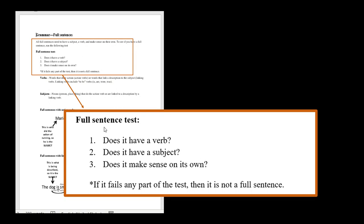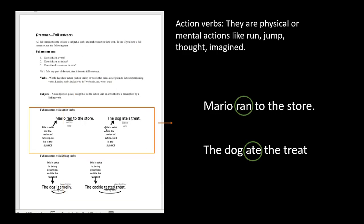A full sentence has to have three elements, so you ask: does it have a verb? Does it have a subject? And does it make sense on its own? If what you have fails any part of the test, then it's not a full sentence — it's a fragment, and you need to fix it. So let's talk about what these words mean, starting with verbs.